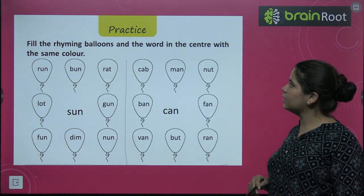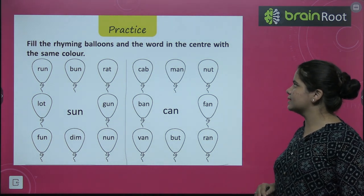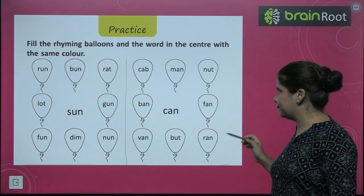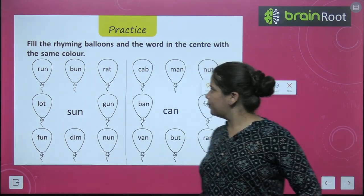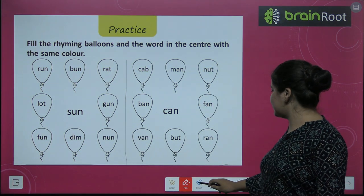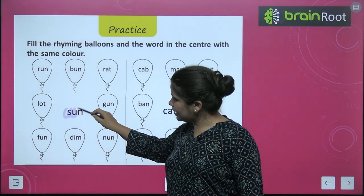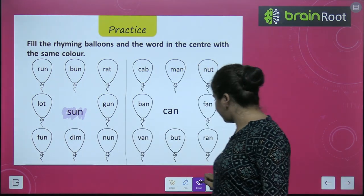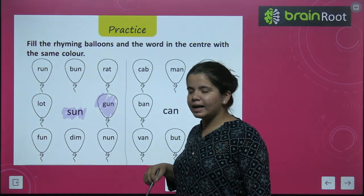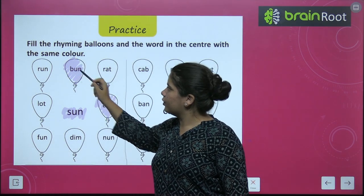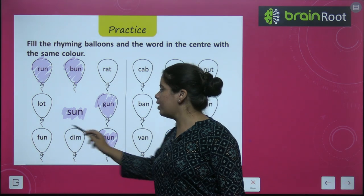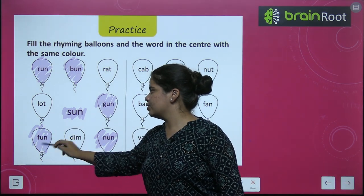Now we have to fill in the rhyming balloons, and color the word in the center and its rhyming words with the same color. The word given is 'sun' — find its rhyming words and color them the same. Sun's rhyming words are: gun, bun, run, nun, and fun. Very good, so we have colored them.